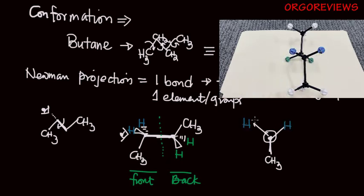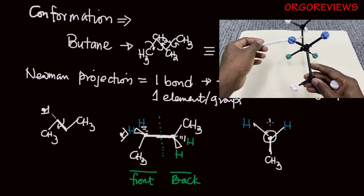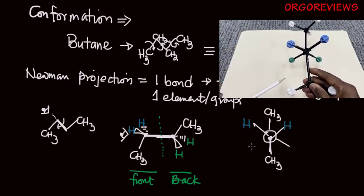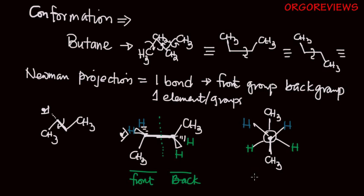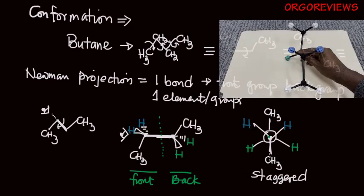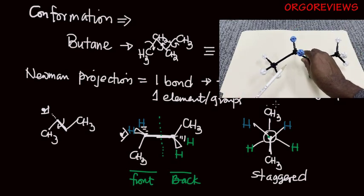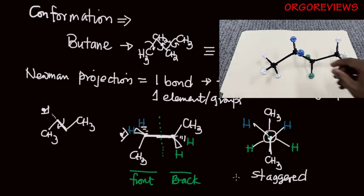In the back structure, you're going to have a CH3 group pointing up and the green hydrogens pointing down. This is what we call the Newman projection — just by looking at one bond, you're able to tell the different arrangements of the groups on the molecule. This is used for small molecules. Based on this arrangement, we can call this a staggered conformation, specifically an anti-staggered or anti-periplanar staggered conformation, because the larger groups are on opposite sides of the structure.